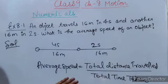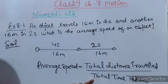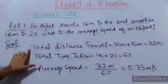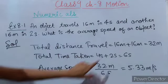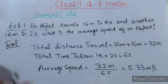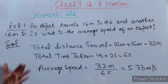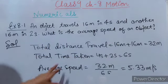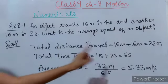We have studied that average speed equals total distance travelled divided by total time taken. Total distance is 16 meters plus 16 meters, which equals 32 meters. Total time taken is 4 seconds plus 2 seconds, which equals 6 seconds.